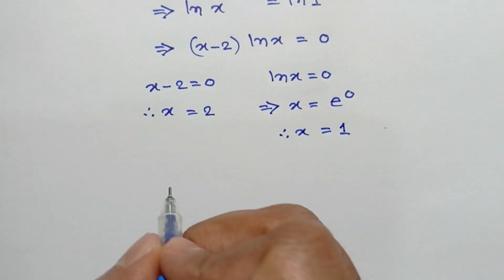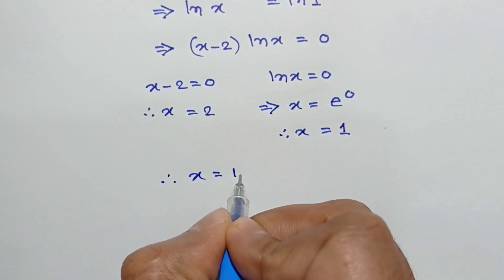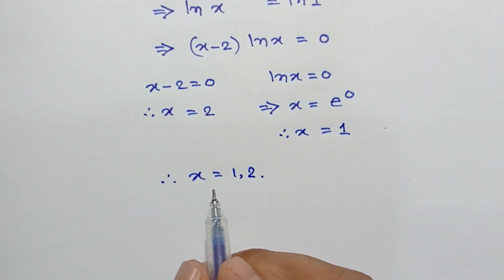Finally, we got x equals 1 comma 2, so the values of x are 1 and 2. This is the solution to this equation. If you like this video, please subscribe to my channel. Thanks for watching.